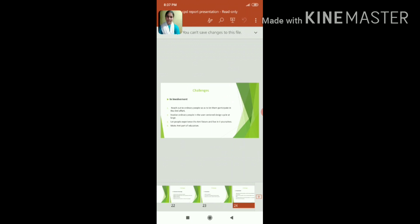The last challenge is in involvement, in which the challenge is to reach out to ordinary people so as to let them participate in the ambient intelligence effort. It involves ordinary people in the user-centered design cycle at large. Let people experience the ambient intelligence future and live in it yourselves. Make ambient intelligence part of education.